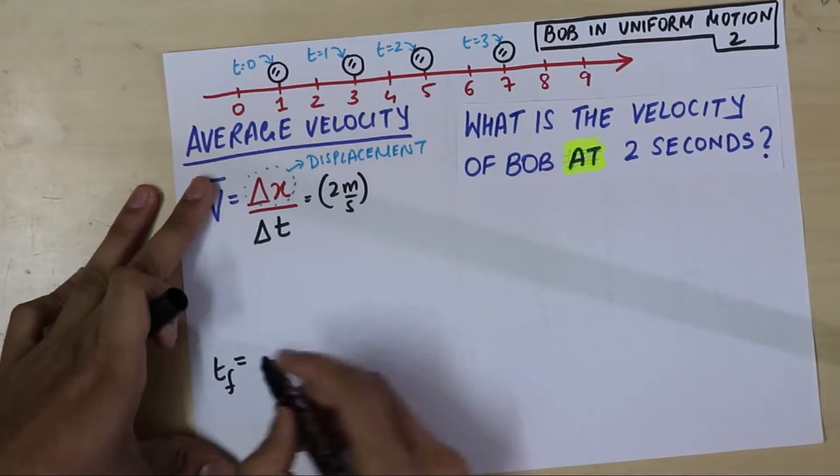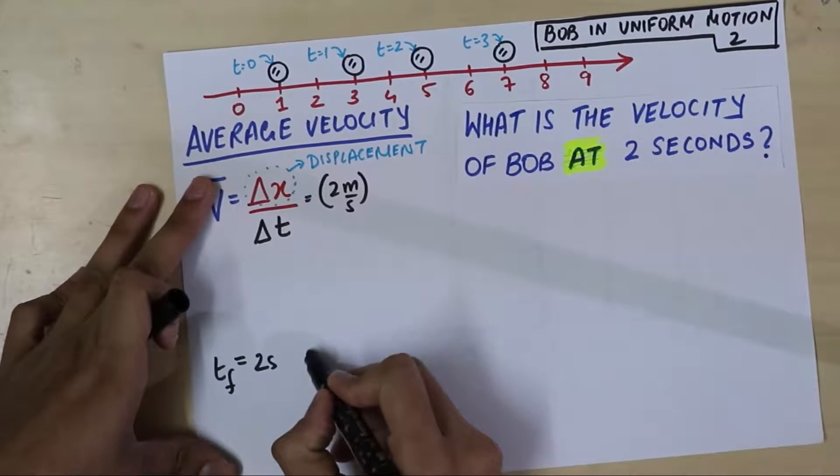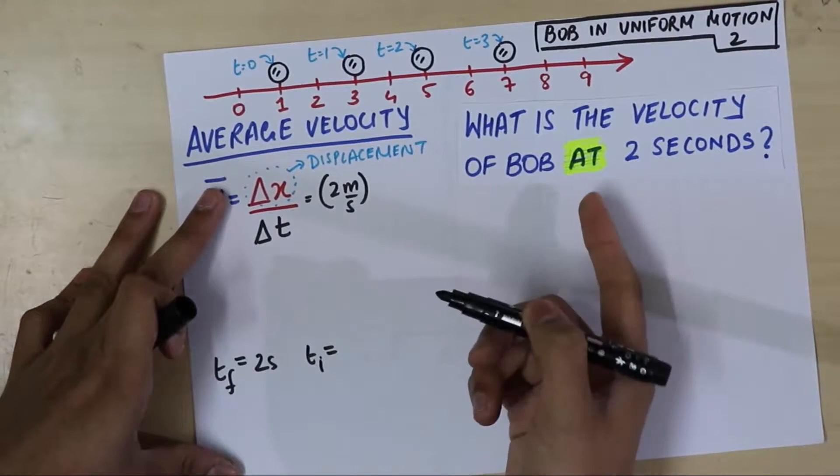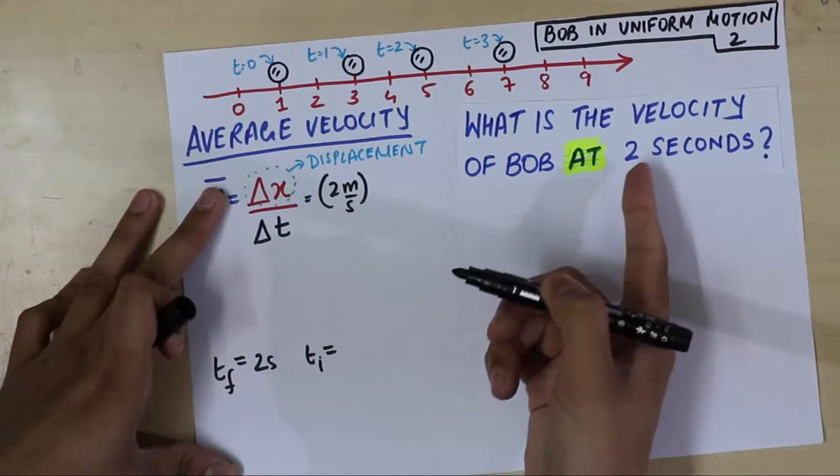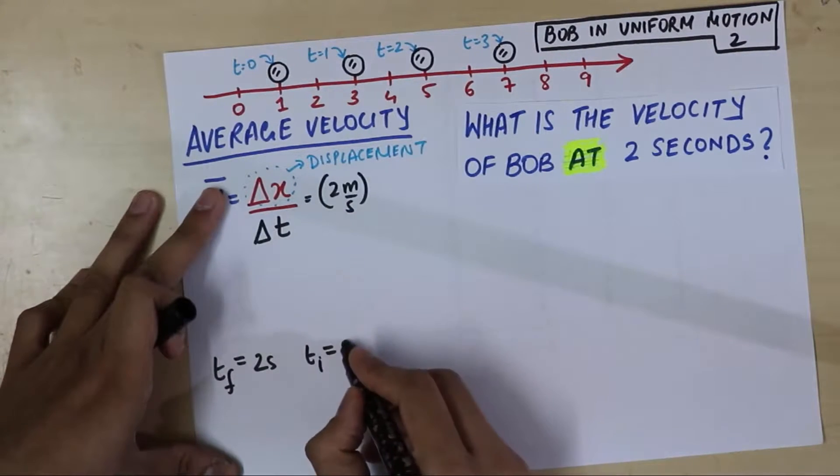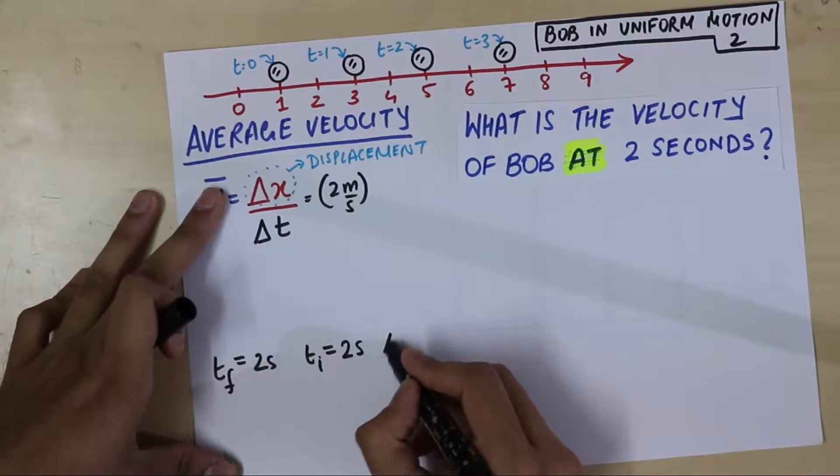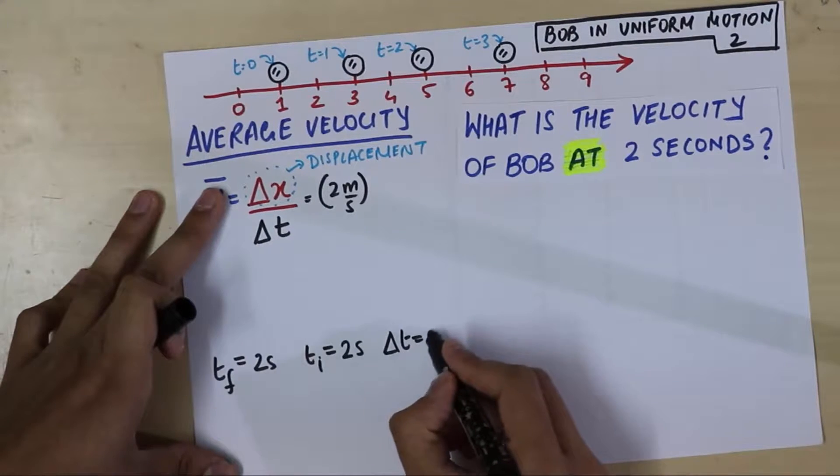What's the initial time? Well, since I am not giving you a time interval, it's at 2 seconds. The initial time is also 2 seconds. What is delta t? Well, obviously, it is zero. That's what I am trying to tell you from that time.